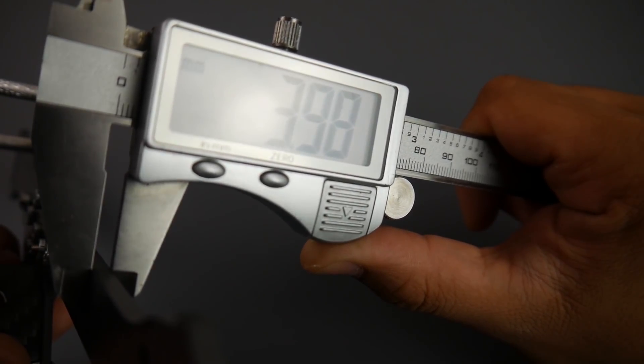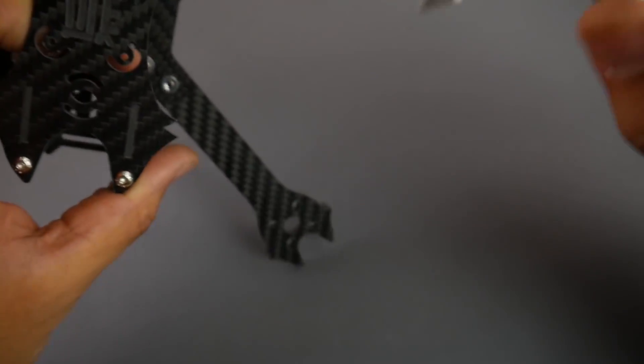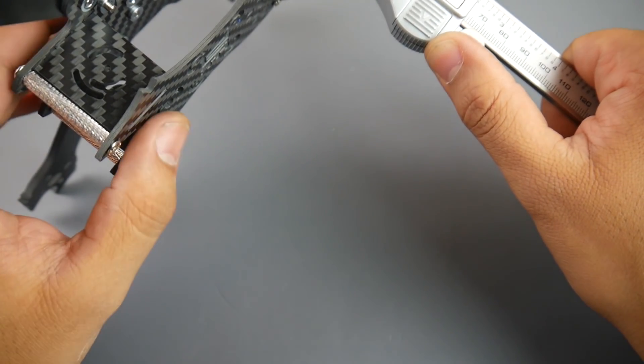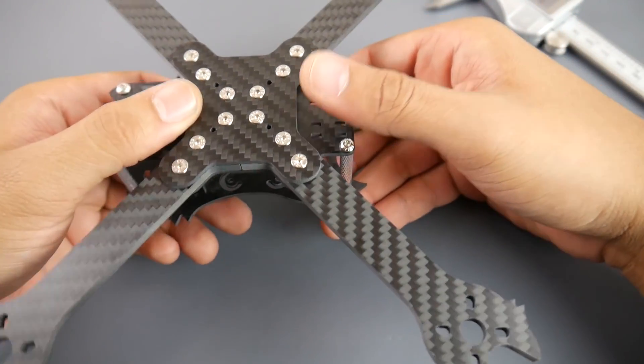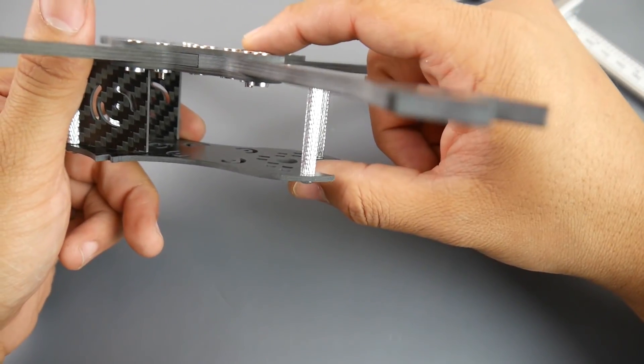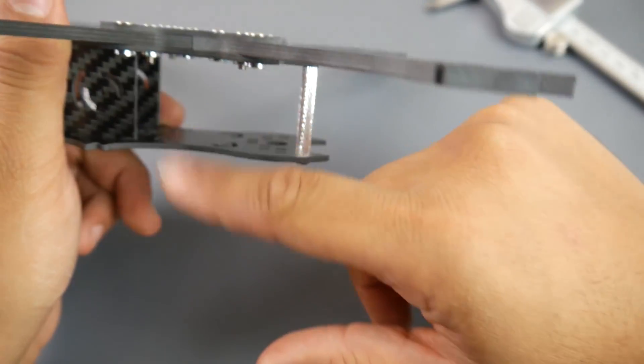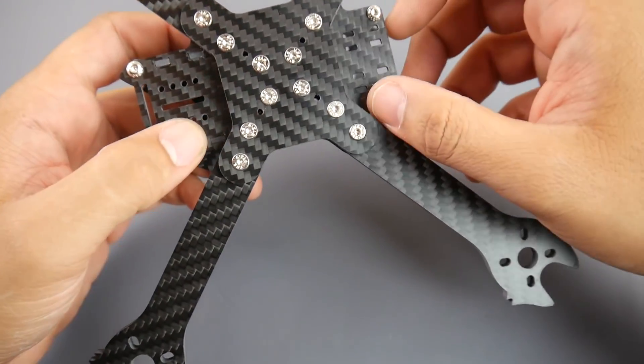Arm thickness is around 4 millimeters as they're stating. Upper plate should be 2 millimeters as they're stating, which is also 2 millimeters. The camera plates I've already measured are 2 millimeters. The arms are sandwiched between 2 millimeter carbon fiber plates. We got the bottom plate and the upper bottom plate, which is really nice to see. It gives it overall rigidity.